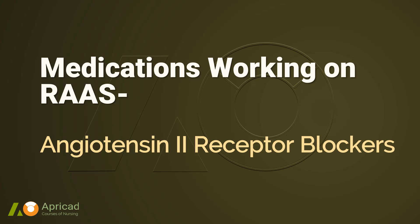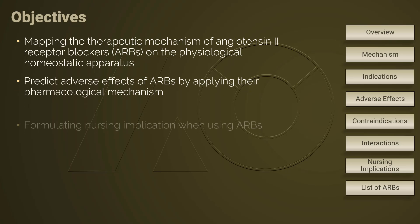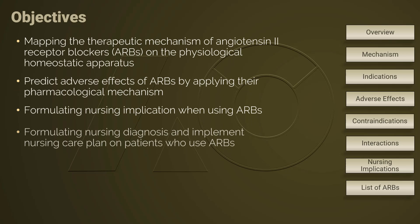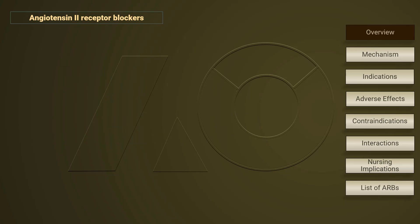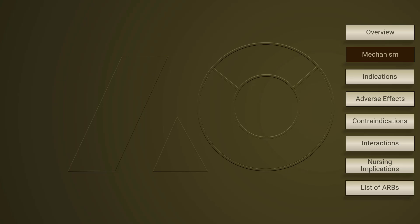The focus of this lecture is angiotensin-2 receptor blockers, ARBs, which work on the RAAS. ARBs share similar effects as ACE inhibitors. Angiotensin-2 receptor blockers work directly on RAAS just like ACE inhibitors, resulting in dropped blood pressure and decreased cardiac workloads. ARBs belong to the family of antihypertensive medications, and their names end with '-sartan.'